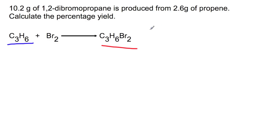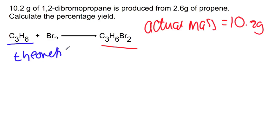To use the mass method, we start off with our actual mass, which was 10.2 grams. We then need to look at the theoretical mass that we should have produced. To do this, we look at the mole ratio. One mole of propene should produce one mole of 1,2-dibromopropane.